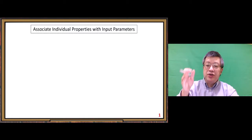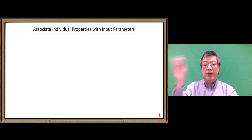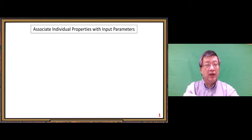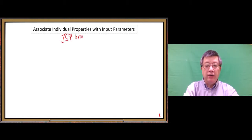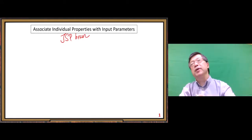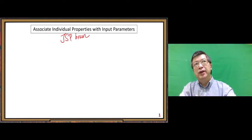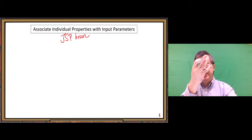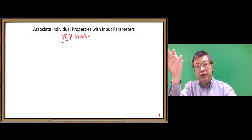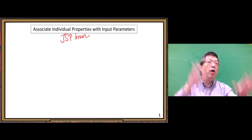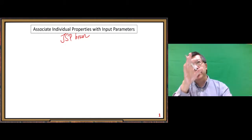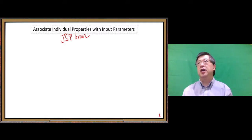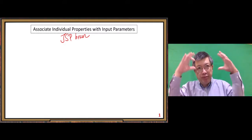We associate individual properties with input parameters. Individual properties from a bean in a JSP — JSP being a little more general than a JavaBean, not necessarily strictly following the specification. We just want the setter and getter part following the rules specified in the JavaBean specification. Otherwise, we cannot do the data binding. So we need that particular part.